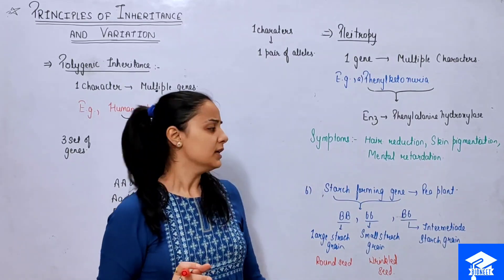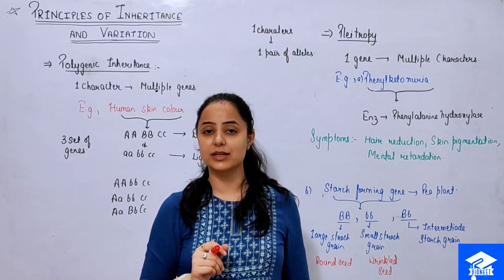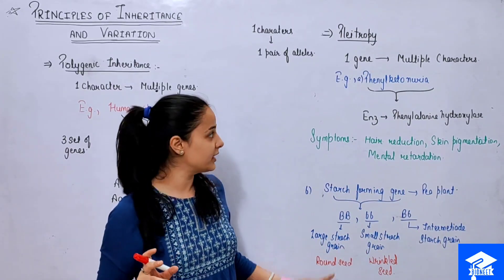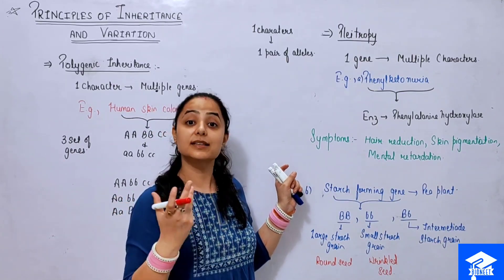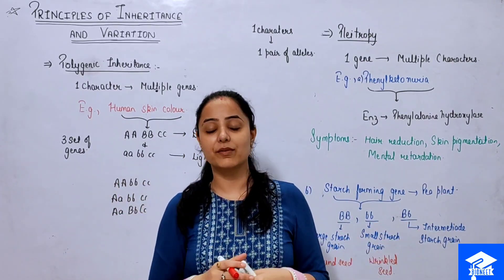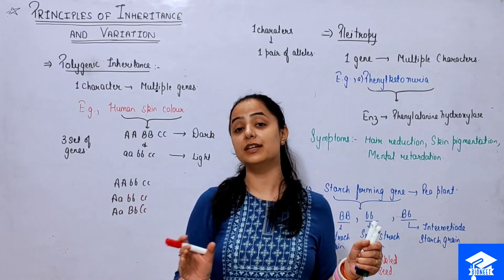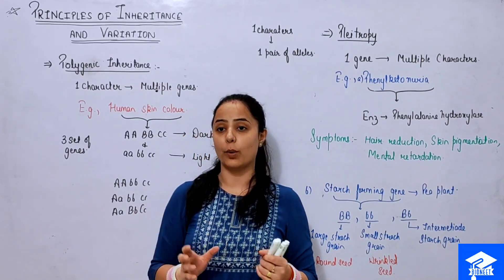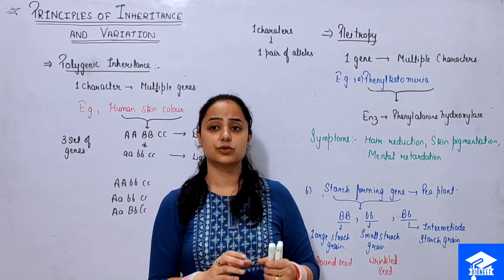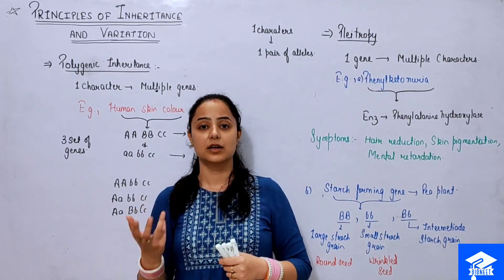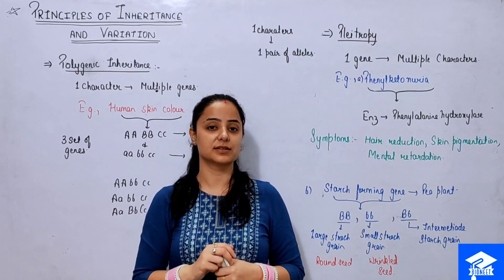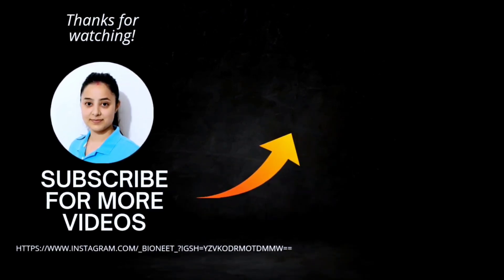So we can see how one gene controls two characters in pleiotropy — both starch grain size and seed shape. We will discuss this example again under the incomplete dominance concept in the next lecture. Polygenic inheritance and pleiotropy are important non-Mendelian concepts. Next, we will discuss the concept of dominance and other non-Mendelian patterns.